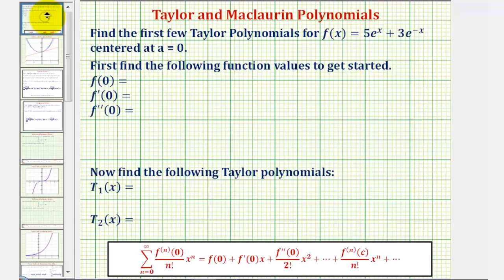Going back to our example, because we're only looking for the degree one Maclaurin polynomial and the degree two Maclaurin polynomial, we only have to find f of zero, f prime of zero, and f double prime of zero before we apply our formula.